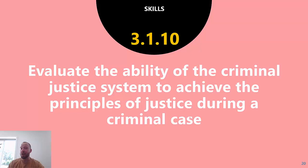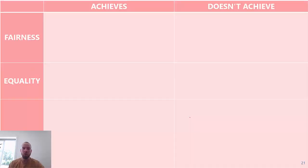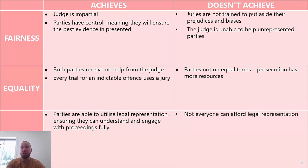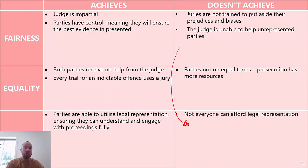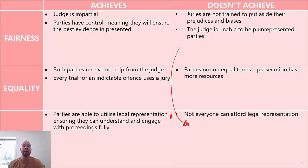Because the judge can't help you - they're an impartial third party - you need that representation. Because you need representation, that's potentially an issue for access. The prosecution has more resources and are lawyers compared to an accused person who is not - that's a disparity. The judge being impartial means impartiality, which is fairness. The fact that parties have control and use legal representation actually promotes access because it means they're more informed. All of this links well to the principles of justice.